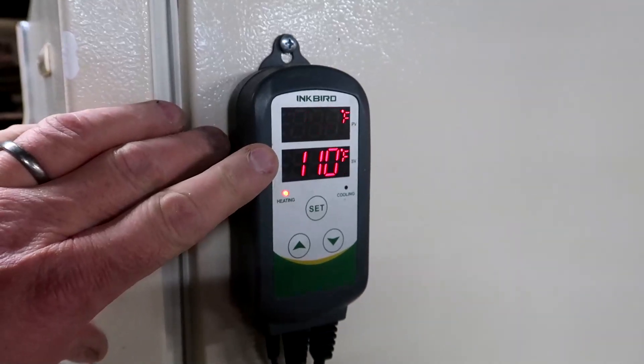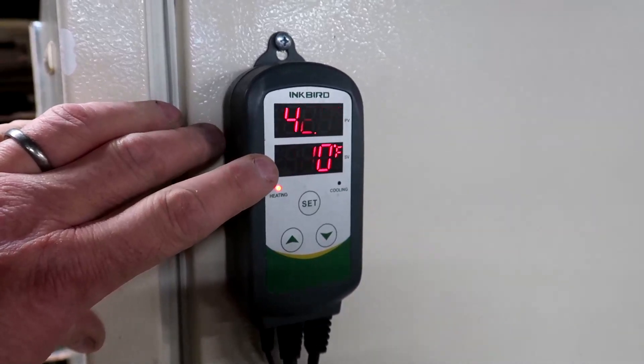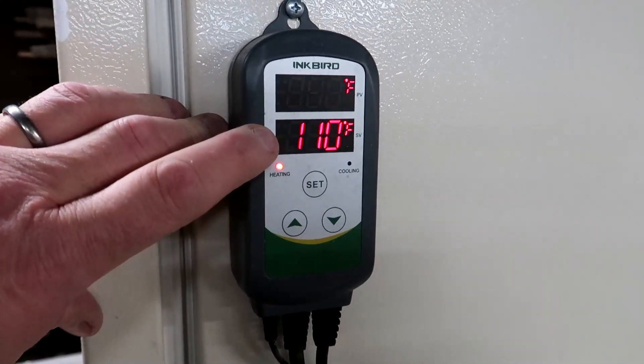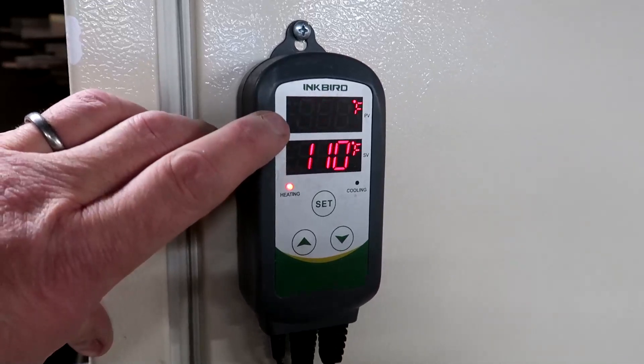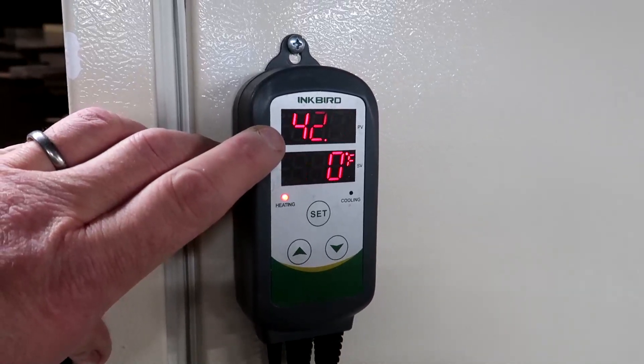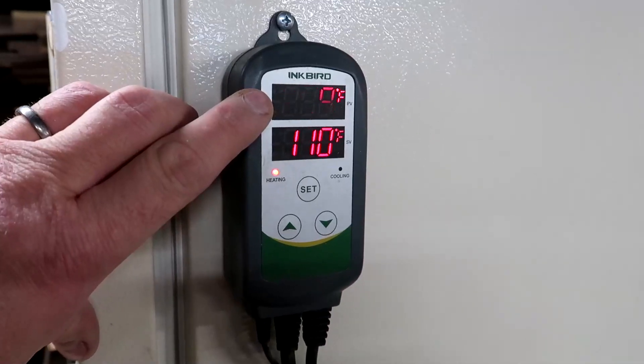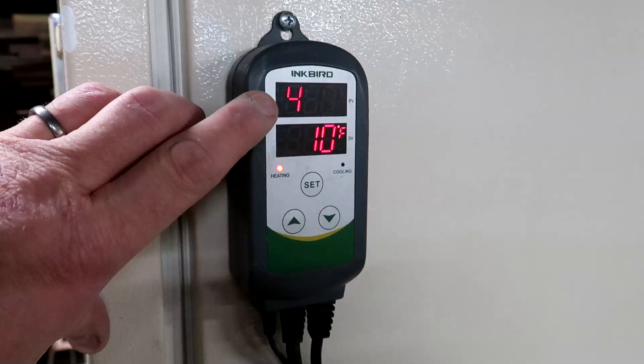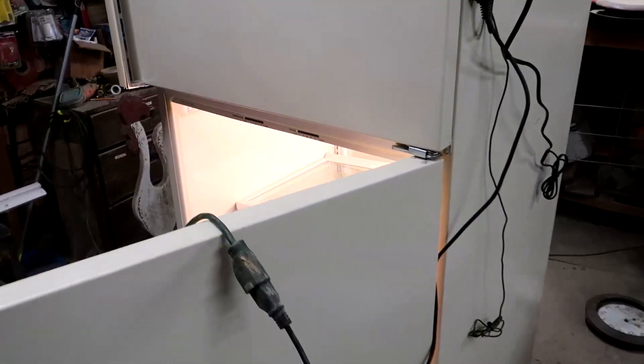And then this part gets plugged into the wall. This is only flashing because of the frame rate of the camera. It's not flashing in real life. It does say that it's heating. I've got it set to 110 Fahrenheit. It's currently 42.9 Fahrenheit in here. But when I close the door and it heats up to 110, it will go off.